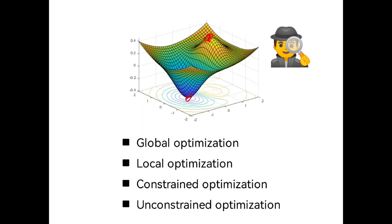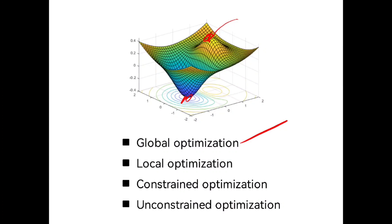Let's say I need to optimize something — I need to find the best thing that can minimize the cost, or the best thing that can maximize the benefit. In this video, I will explain the four main concepts in optimization: global optimization with the meaning of finding a global optimal solution, local optimal solution, constrained optimization problem, and unconstrained optimization problem.